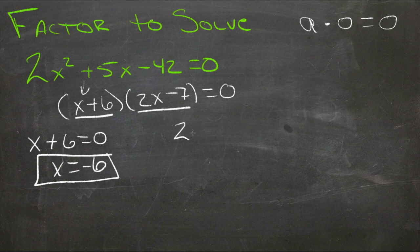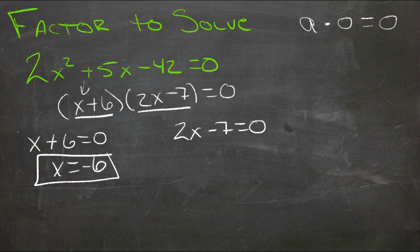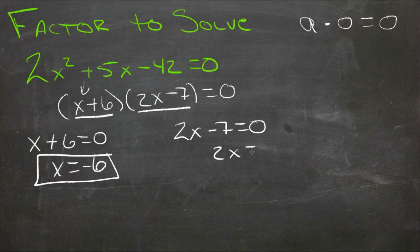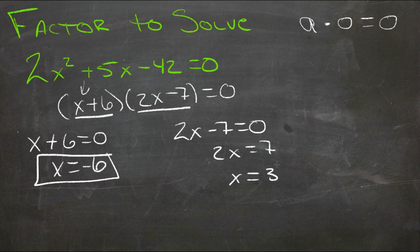The other one is whatever x needs to be to make this statement equal to zero. So we add 7 to both sides, and we get 2x equals 7. Divide both sides by 2, and we get x equals 3 and a half.